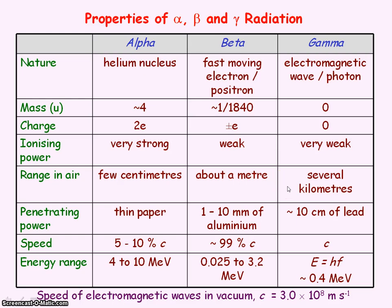Whereas the range in air for gamma radiation is several kilometers. And from a point source, it actually obeys inverse square law with distance. And again, the range in air for beta radiation will be somewhere in between, so it's about a meter.